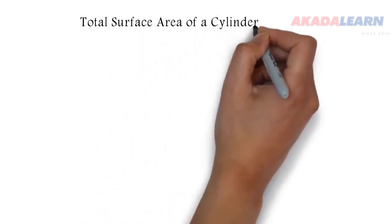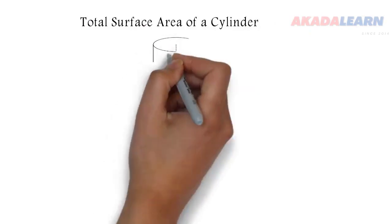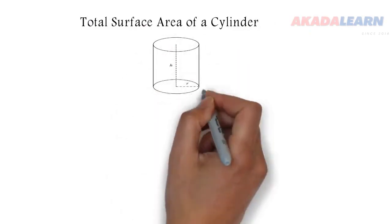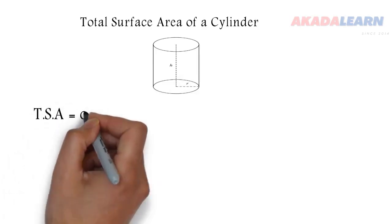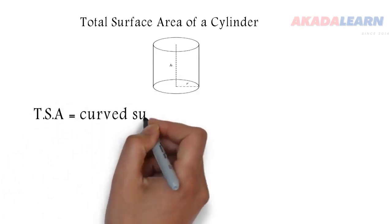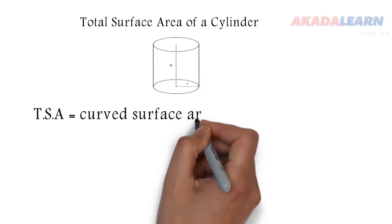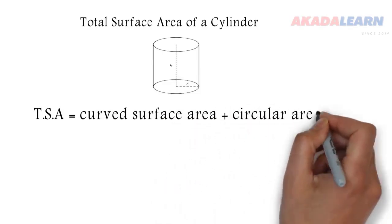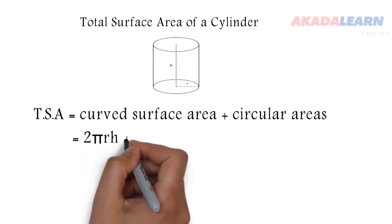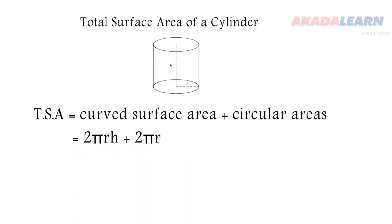A cylinder has a curved surface and two circular ends - the top and the base. The total surface area is the curved surface area plus the circular areas. If the top and base are closed, the formula for total surface area is 2πrh + 2πr².